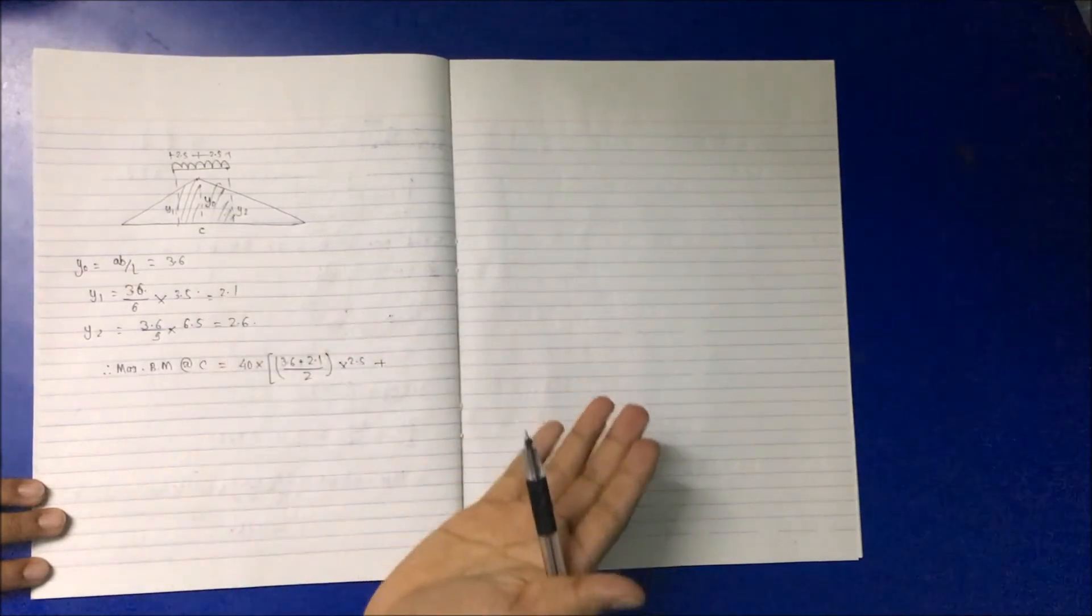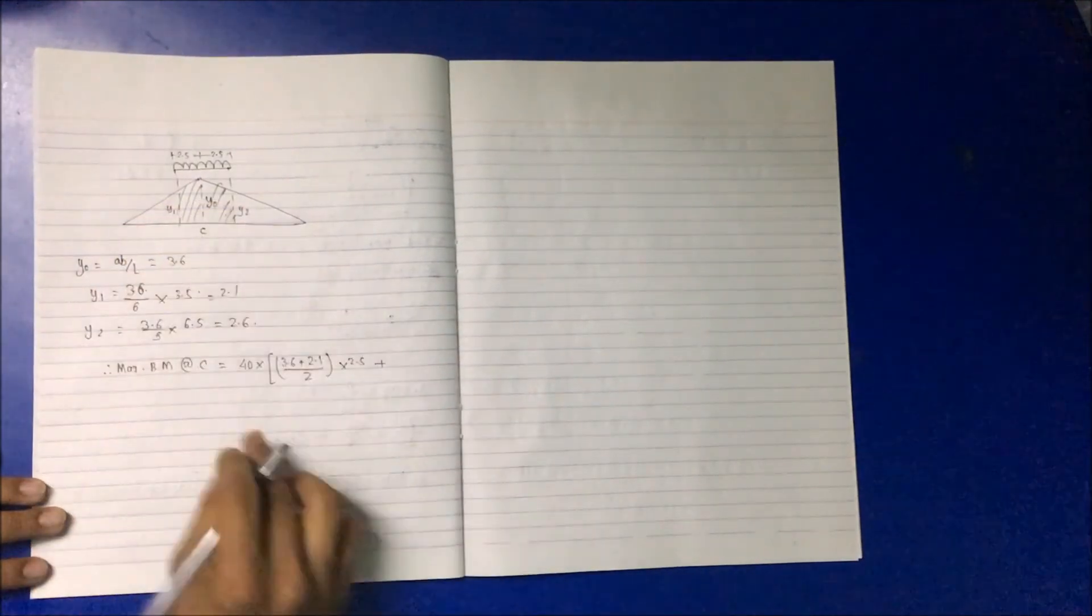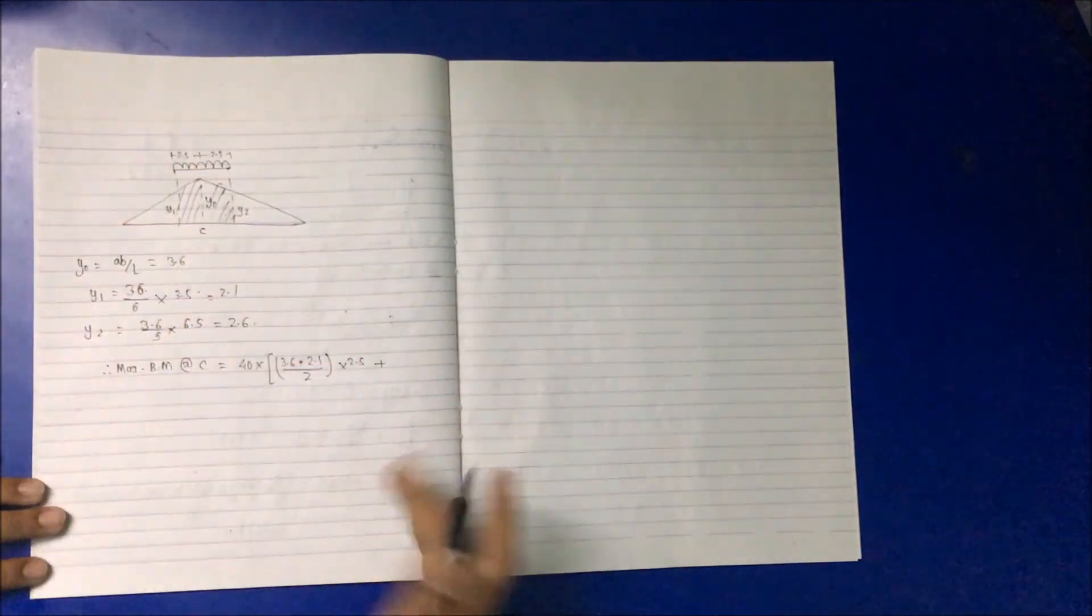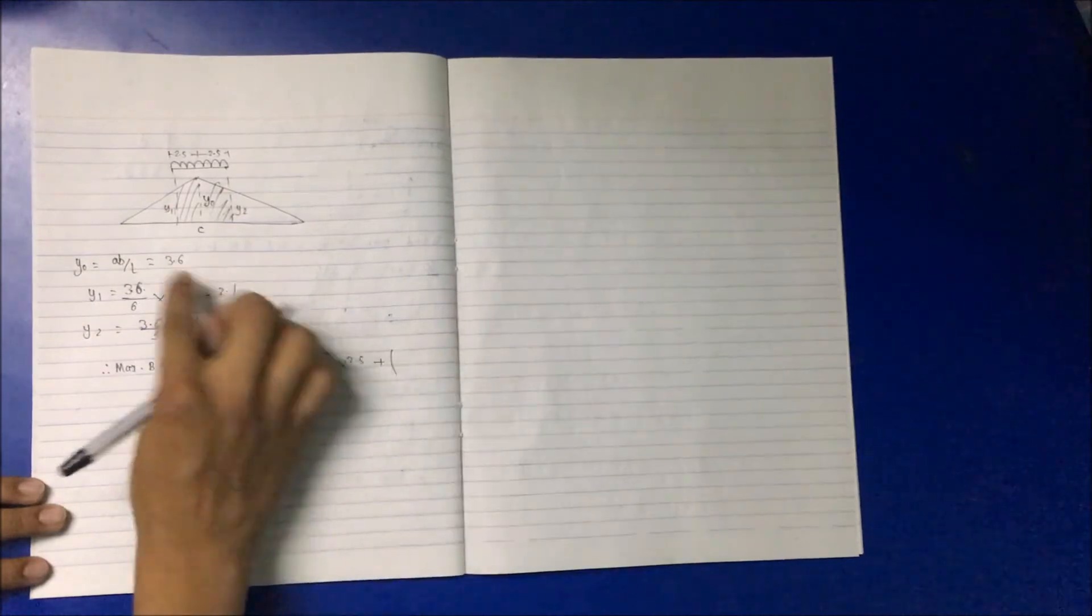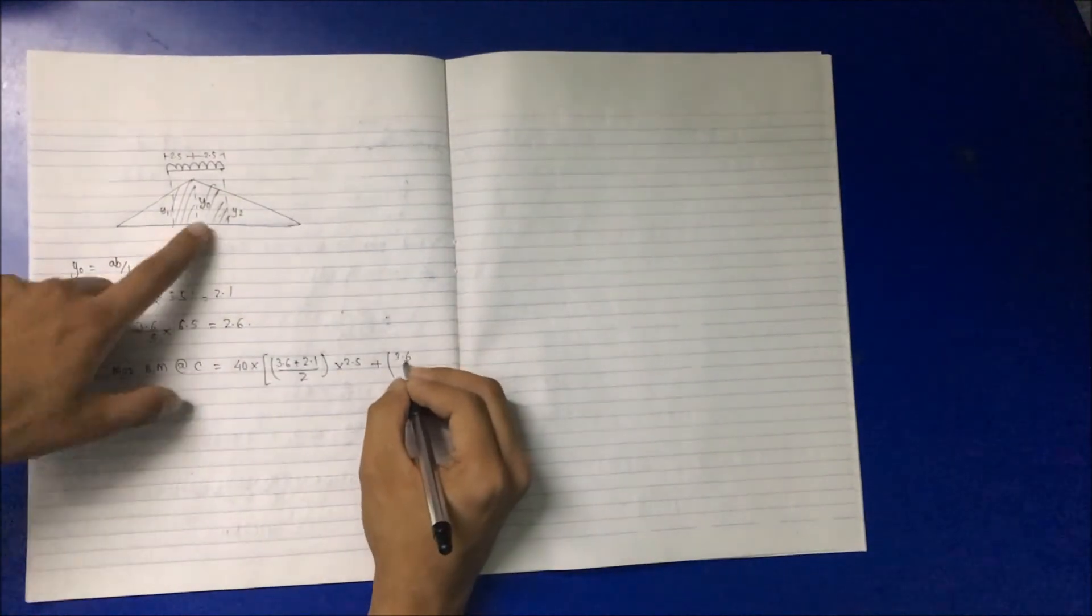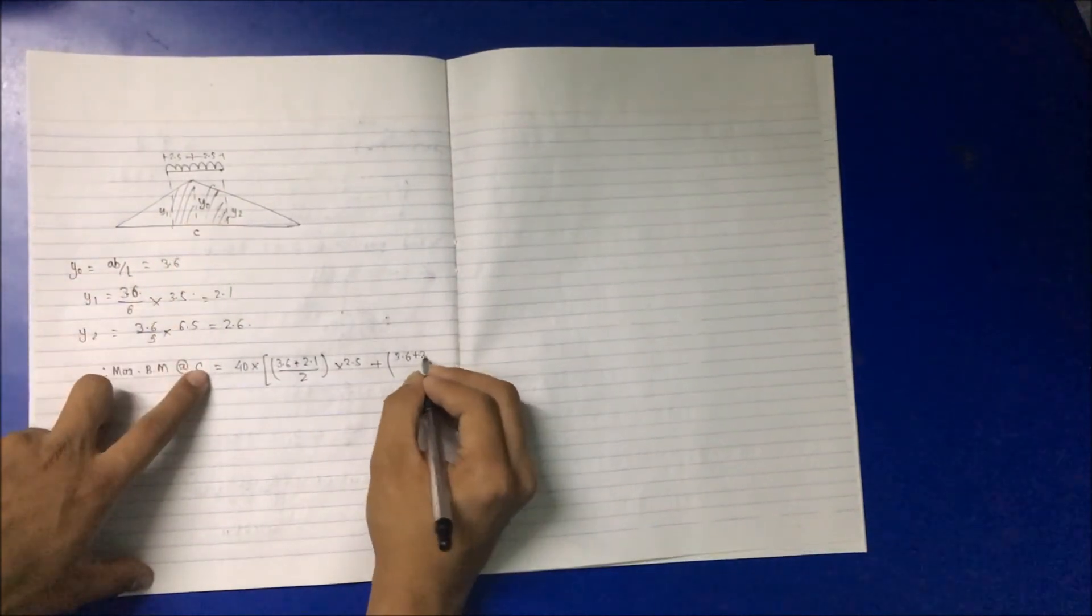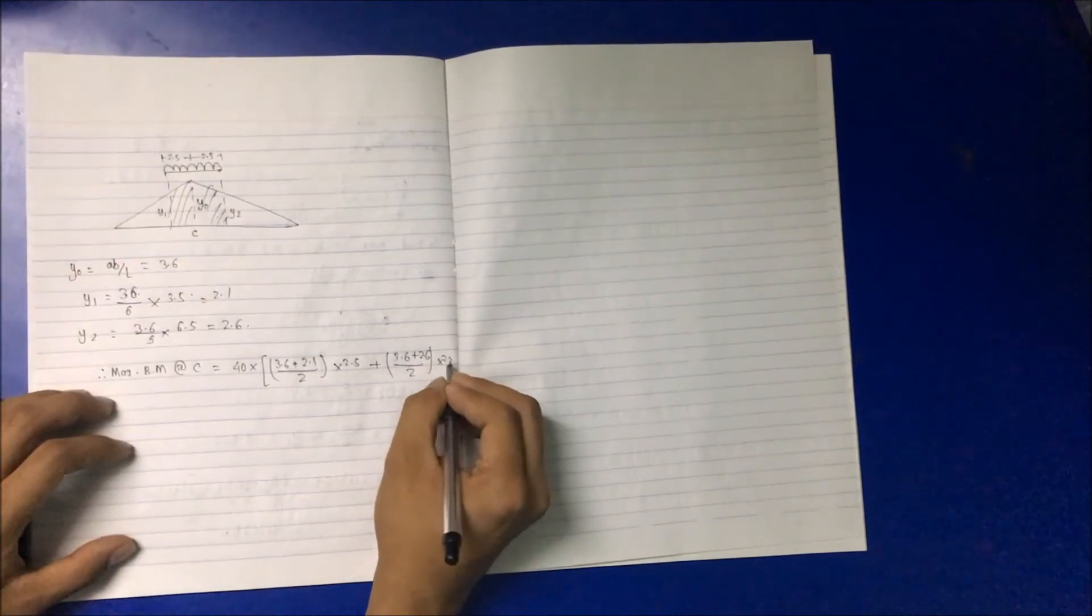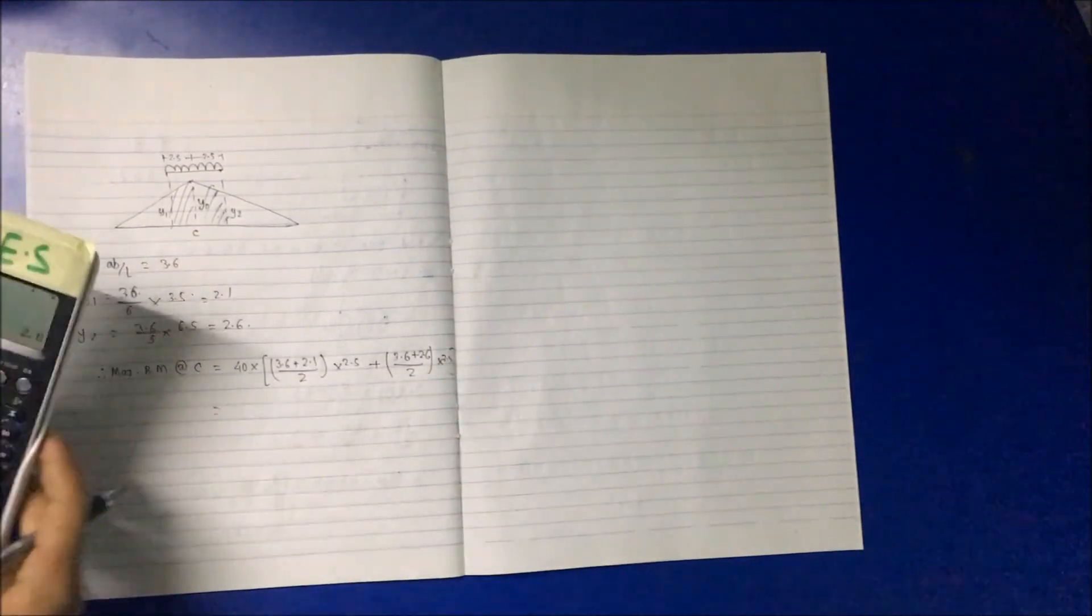Plus, taking 40 as common for both trapezoids as the loading is the same, that is 40 kN: 3.6, y_naught, plus y2, 2.6, divided by 2, multiply by 2.5.